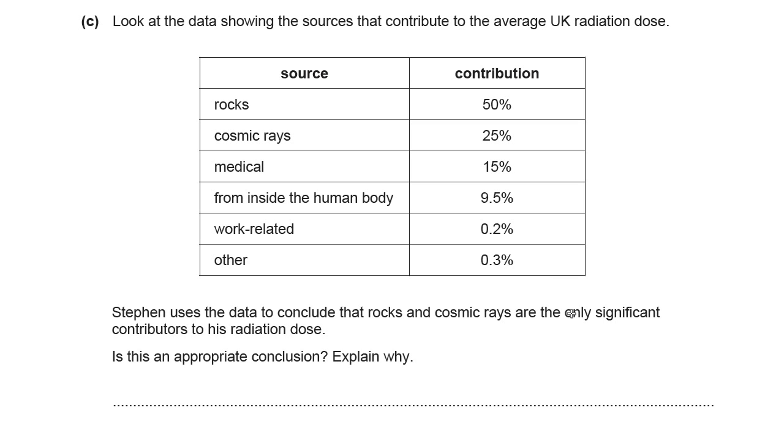So are they the only significant contributors to his radiation dose? We can see that the most, they are the highest. This is almost in order 50, 25. Rocks and cosmic rays are definitely significant ones. But are they the only ones? Is this an appropriate conclusion? Explain why. It's a two mark question. So think first whether you're going to say, yeah, it's appropriate or no, it's not. Because you can actually get marks for either answer. So pause the video now, decide which way around you're going to answer this and have a little go.